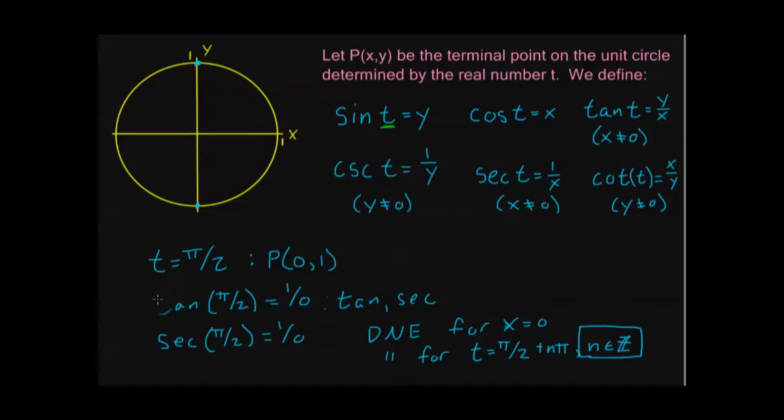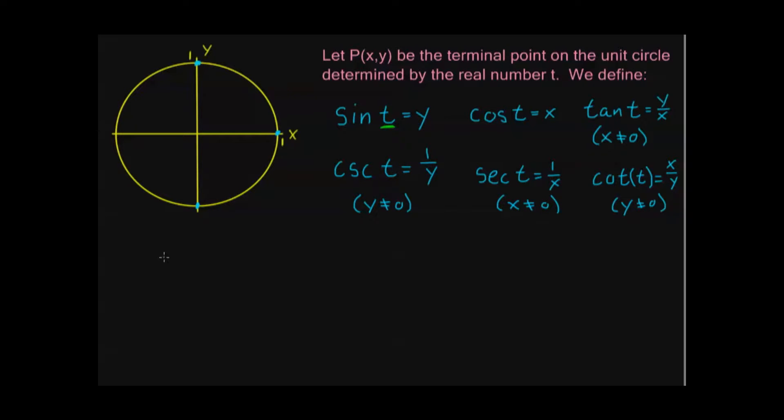Now, I want to talk similarly about our other two functions up here that have these restrictions, cotangent and cosecant, or cofunctions. Now, of course, it's a little bit different, right? We're not looking at x equals 0 anymore. Cosecant and cotangent raise issues when y equals 0. So, let's go ahead and just look at this point right here, t equals 0. This is the easiest point we have to deal with, isn't it? When I have t equals 0, my terminal point p is the same as my initial point, it's just the point 1, 0.